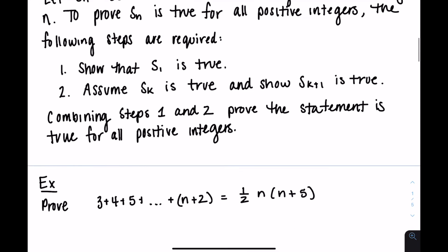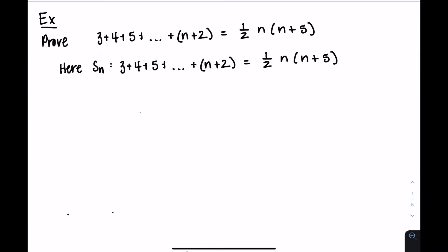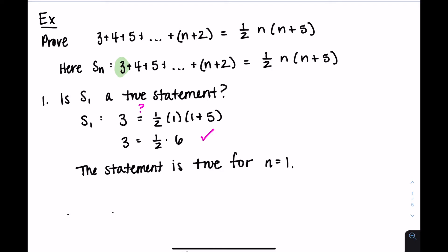Let's prove a statement involving natural numbers is true. The left hand side equals the right hand side regardless of N. First, we check if S1 is a true statement. With just one term, plugging in N equals 1 gives you (1+2) = 3 on the left. Does it equal one half times 1 times (1+5)? That gives you 3 equals one half times 6 — yes, that's definitely a true statement, so it's true for N equals 1.